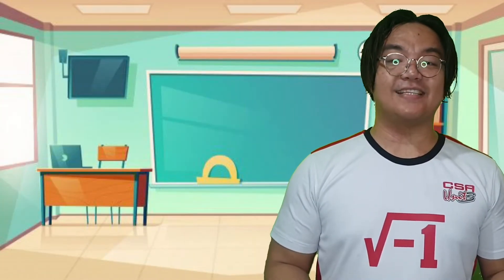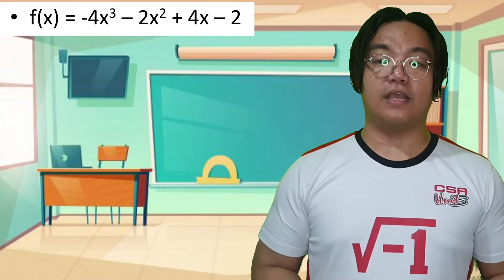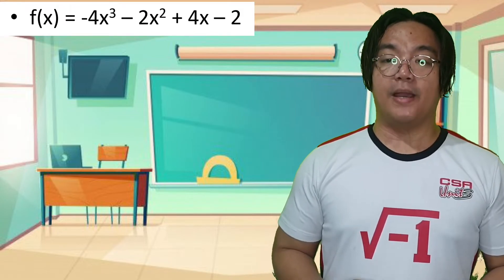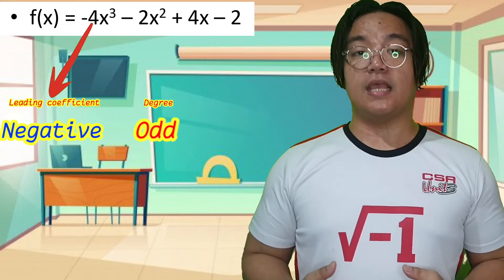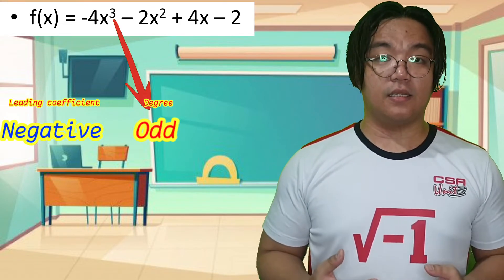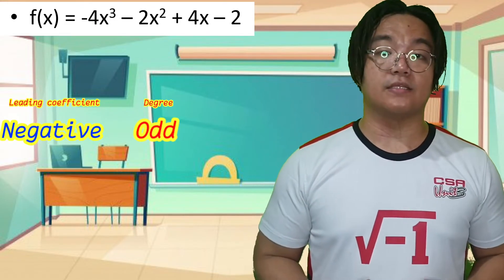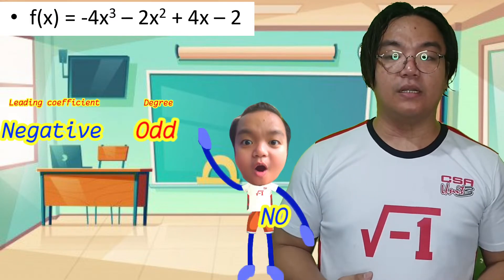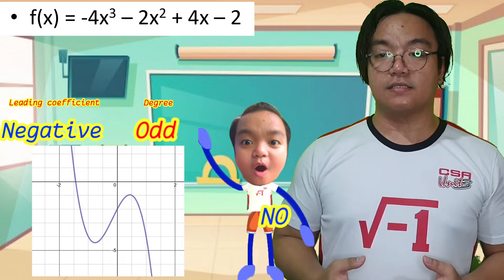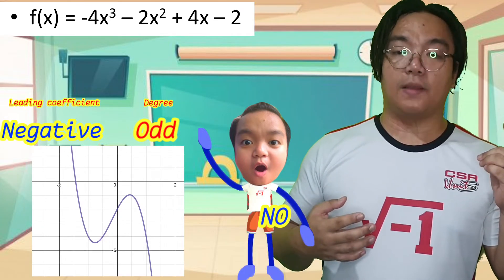For the last example, f(x) = -4x³ - 2x² + 4x - 2. The leading coefficient is negative 4, and the leading term's exponent is an odd number. So it falls under NO in the penepono pattern—negative odd. Therefore, the graph rises up to the left and drops down to the right.